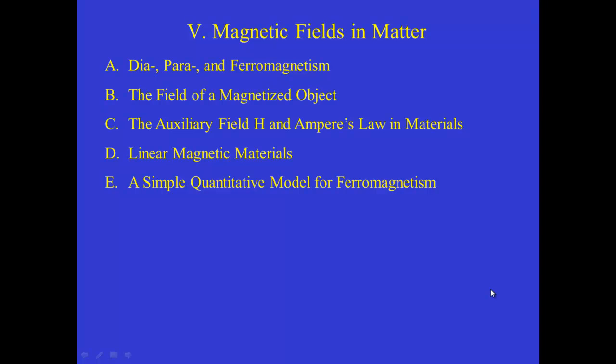Welcome back to Physics 371 online. Today we begin our discussion of material from chapter 6, which deals with magnetic fields applied to matter and the way that atoms composed of electrons respond to applied magnetic fields. We'll begin with a discussion of diamagnetism, paramagnetism, and ferromagnetism.